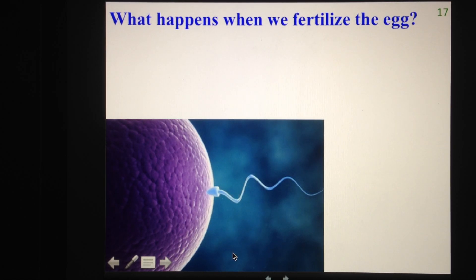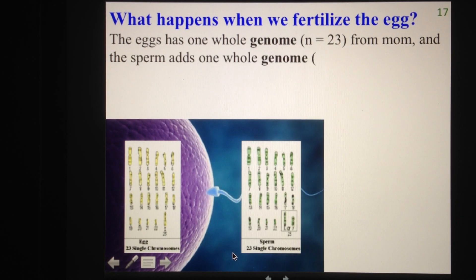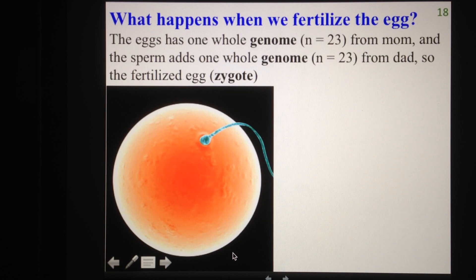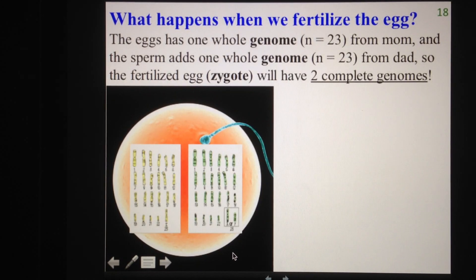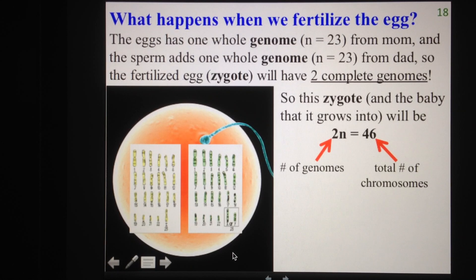What happens when we take that egg and actually fertilize it? This egg has one whole genome consisting of 23 chromosomes that came from mom. The sperm also adds an entirely new genome — one whole genome with another 23 chromosomes that came from dad. So this fertilized egg, which we also call a zygote, will actually have two complete genomes. That gives us 2n equals 46. The number before the n tells us how many genomes we have — so this zygote has two sets of chromosomes, giving us 2n. The number after the equals sign tells us the total number of chromosomes: since each genome has 23, our total is 46.